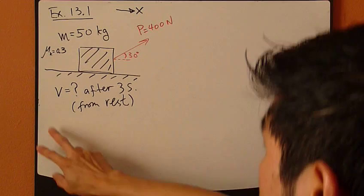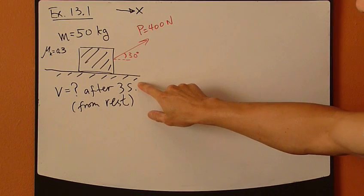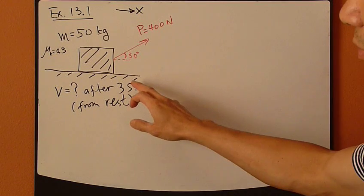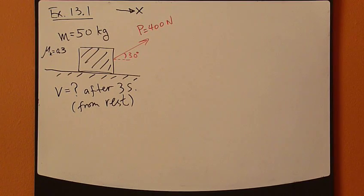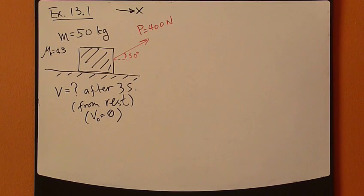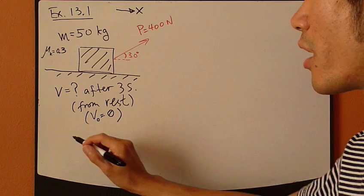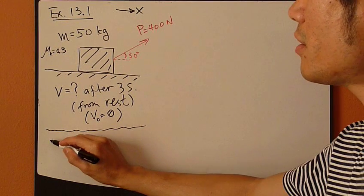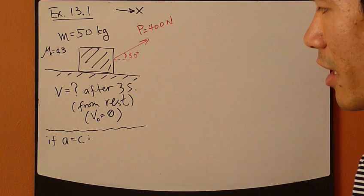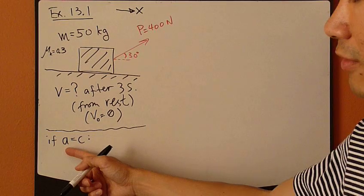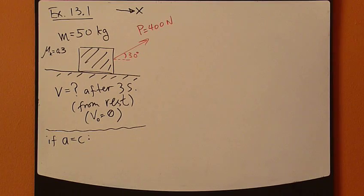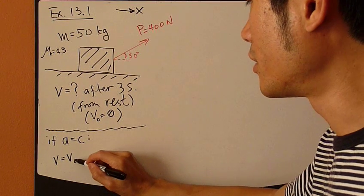Now, we want velocity. Time is given, 3 seconds. How do we get velocity? Knowing time and knowing initial velocity. Well, think back to chapter 12, kinematics. The case where, if acceleration is constant, that's a special case. For constant acceleration motion, you have 3 equations, right? They will allow you to solve for velocity. In this case, how about this equation right here?